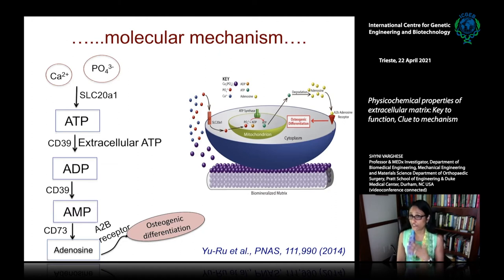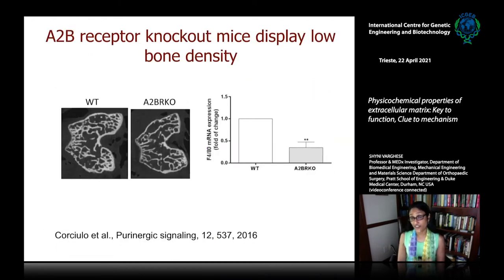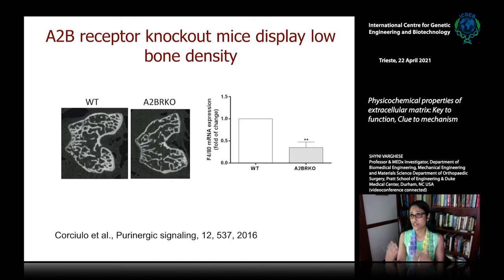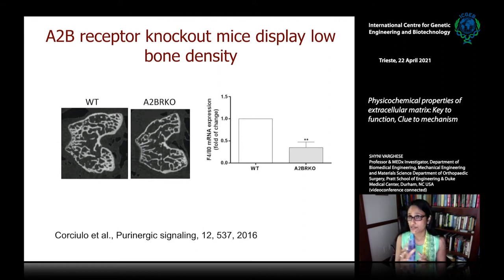We proposed a new molecular mechanism: biomineralized material dissociates into calcium and phosphate ions; phosphate transport is assisted by SLC20A1, contributing to intracellular ATP which is secreted outside; extracellular ATP is metabolized into adenosine; and adenosine acts as an autocrine or paracrine molecule through the A2B receptor, supporting osteogenic differentiation. After our publication, studies using A2B receptor knockout mice showed they display low bone density — more like osteoporosis — and their bone marrow stem cells have less ability to differentiate into osteoblasts. Whatever we identified with the biomaterial was now proven by animal studies.